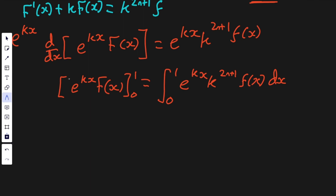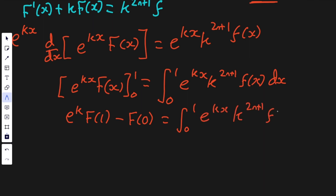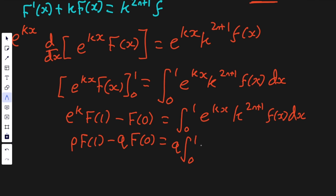On the left, evaluating gives e to the k times F of 1 minus e to the 0 times F of 0, which is e to the k times F of 1 minus F of 0 — which is essentially an integer. Since e to the k equals p over q, we multiply both sides by q. This gives p times F of 1 minus q times F of 0, equals q times the integral from 0 to 1 of e to the kx times k to the (2n plus 1) times f of x dx.